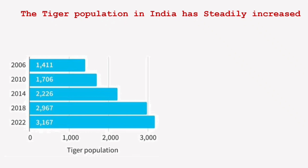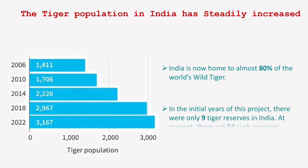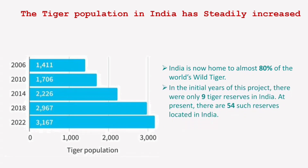India is now home to almost 80% of the world's wild tigers. This is a very big achievement for us, because if we talk about 100% of tigers globally, 80% of them are found in our own country.